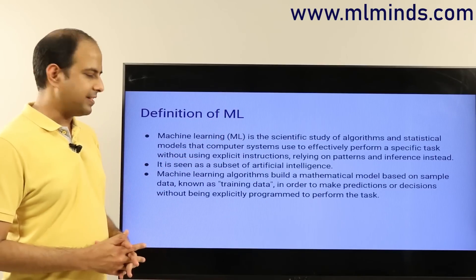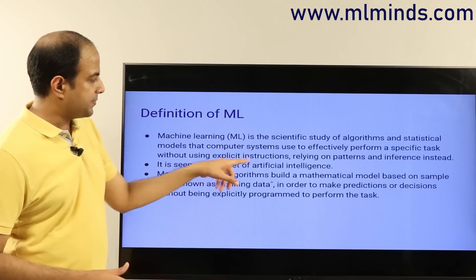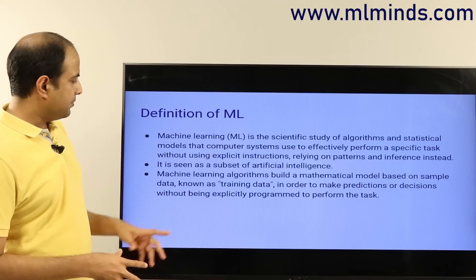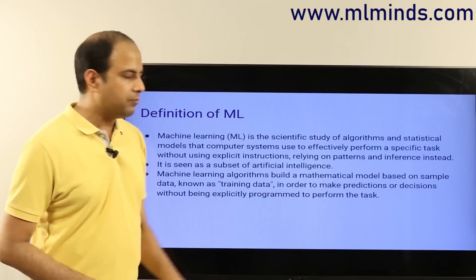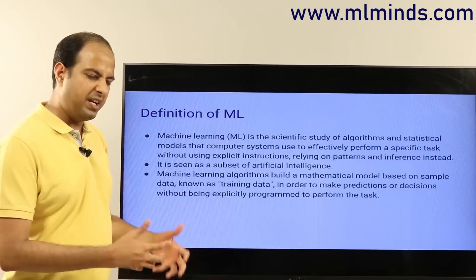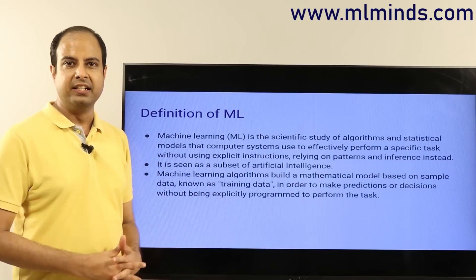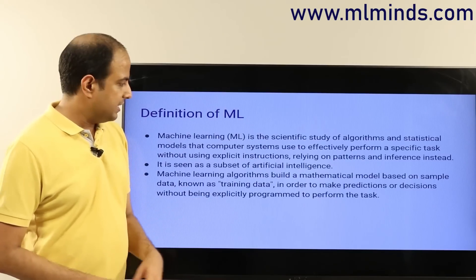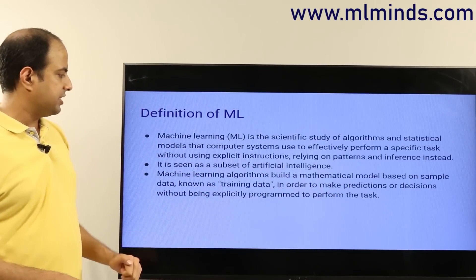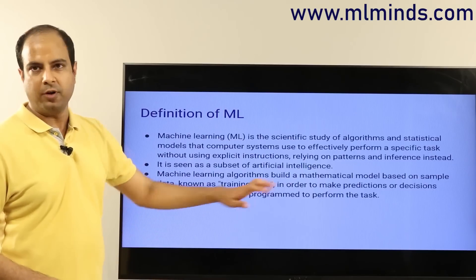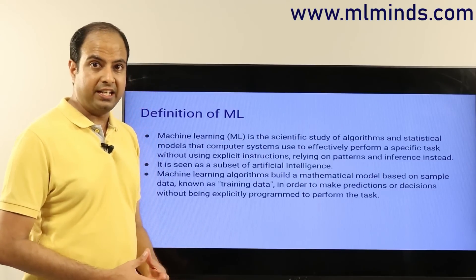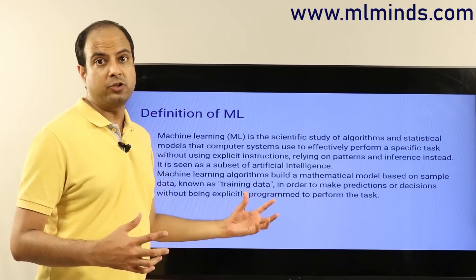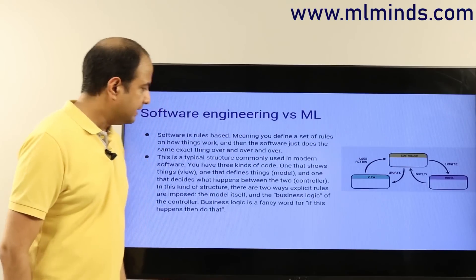Machine learning is seen as a subset of artificial intelligence — ML is a subset of AI. Machine learning algorithms build a mathematical model based on sample data, known as training data, in order to make predictions or decisions without being explicitly programmed to perform the task. The machine learning engineer is not going to program the solution specifically, but will come up with an automatically generated program.